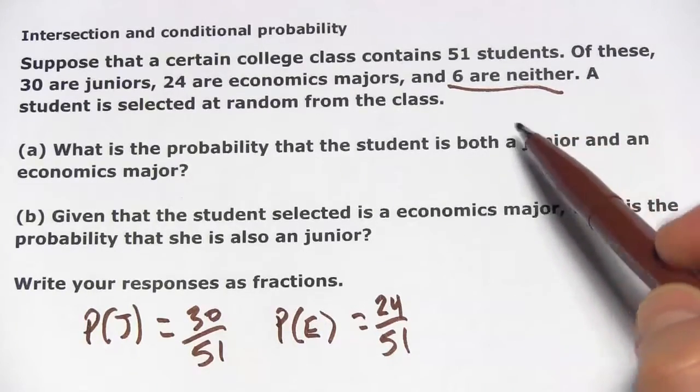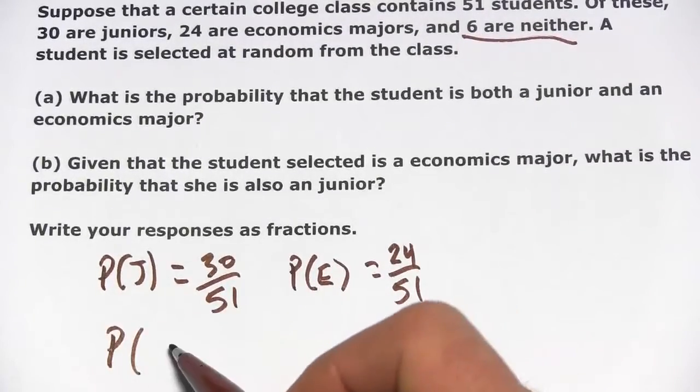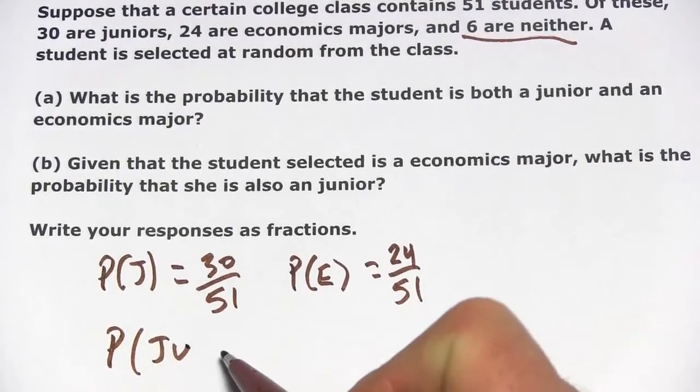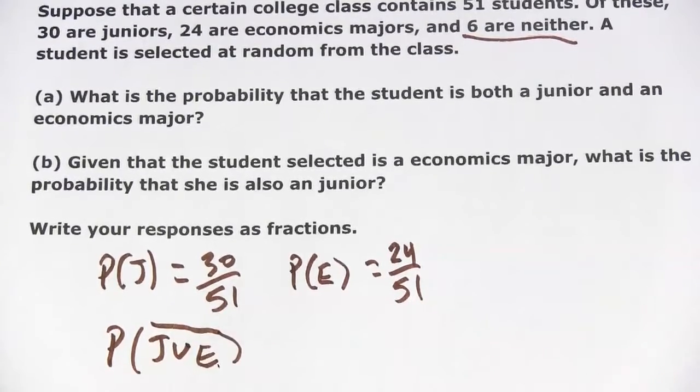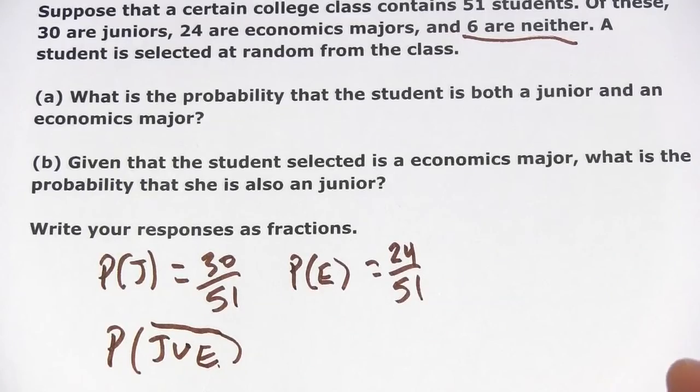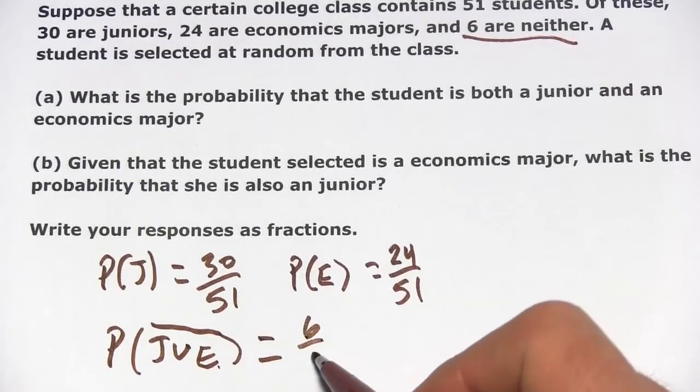These are people who are neither. So what we really have is the probability of not the union of being a junior in economics major. And that is 6 out of 51.